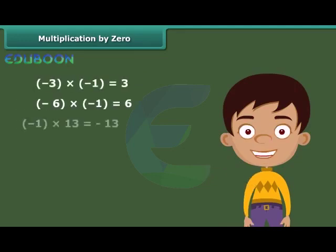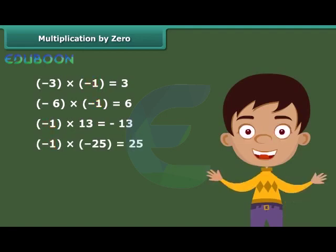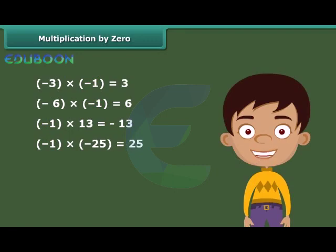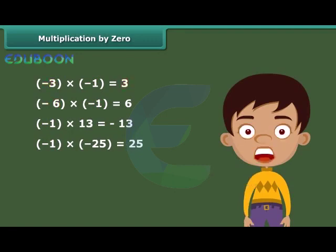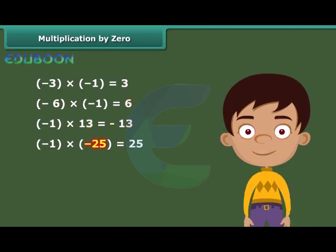But when we multiply any integer with minus 1, we get the additive inverse of the integer. In these examples, minus 3 has become 3, minus 6 has become 6, 13 has become minus 13, and minus 25 has become 25.